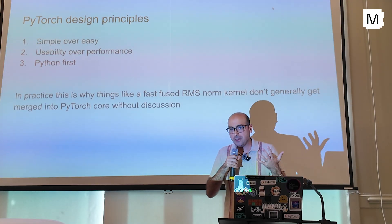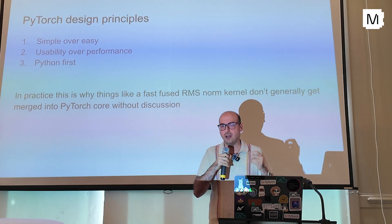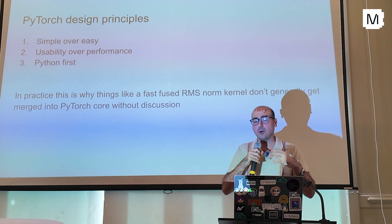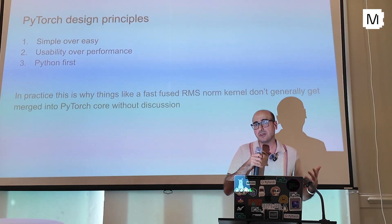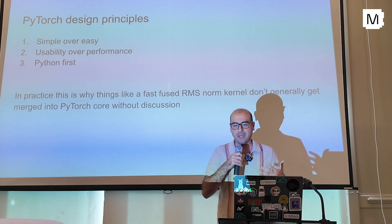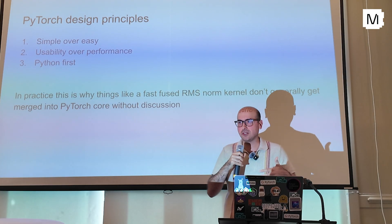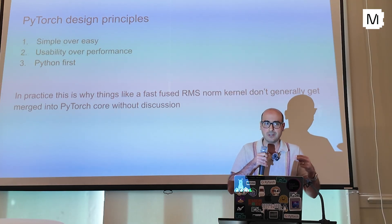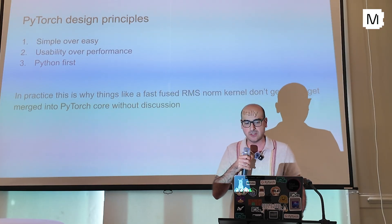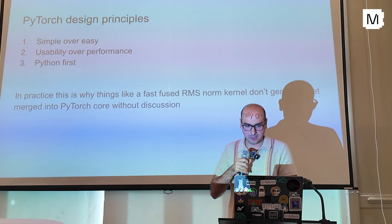Our design principles — and I've seen folks often get this wrong with PyTorch — are: simple over easy, usability over performance, and Python first. In practice, people often ask why there's no fused RMS norm in PyTorch. That's because we tend to be very conservative about what kernels to add. PyTorch is already a four-gigabyte binary. We tend to be very slow about making decisions here, but obviously people want to make their code faster.